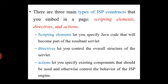There are three main types of JSP constructs, which are very important to remember. The first is scripting elements, which let you specify the Java code that becomes part of the resultant servlet. The second is directives, which control the overall structure of the servlet. The third is actions, which specify what existing components should be used and control the behavior of the JSP engine.